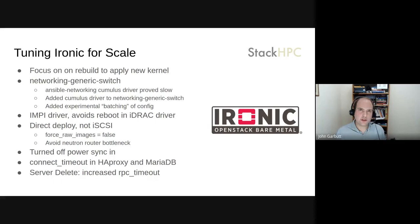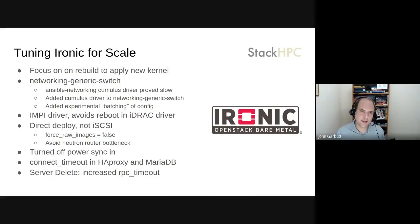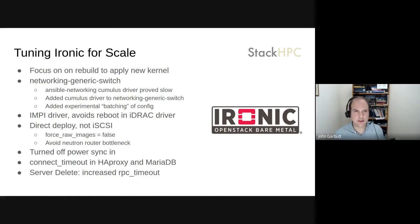One extra thing we developed was using etcd to batch up the requests. When a request comes in, we write it to etcd, and each incoming request kicks off an async job to get all the latest requests, batch them together, and submit them to the switch. With this mechanism, we're able to get the time to reconfigure the switch for a whole rack to well under a minute. During a rebuild process you actually have to pull the port out of the tenant network, put it into the provisioning network, then pull it back out and into the tenant network at the end - so speeding this up was a big help to the overall re-image time.